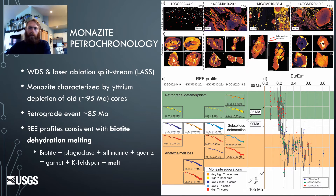To learn more about the metamorphic processes, monazites were analyzed at the University of Alaska Fairbanks and Laurentian University using Wavelength Dispersive Spectroscopy (WDS) and laser ablation split-stream methods. The trace element profiles and WDS maps show thorium-rich, yttrium-depleted cores and yttrium-rich rims, which is consistent with biotite dehydration melting, in which biotite + plagioclase + sillimanite + quartz yields garnet + K-feldspar + melt. This took place at around 95 million years ago based on the ages of the monazite cores, with a younger retrograde metamorphic event around 85 Ma. The monazite chemistry confirms what we see in drill core — that melting took place in these rocks.